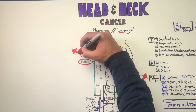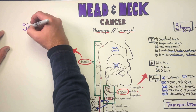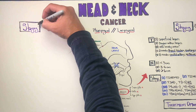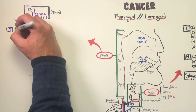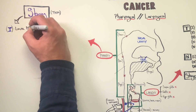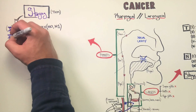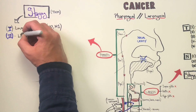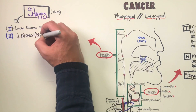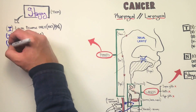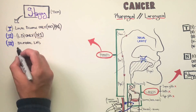Turning now to pharyngeal carcinomas — these can be nasopharyngeal, oropharyngeal, or hypopharyngeal carcinomas. The staging structure again is the TNM staging structure. When we're looking at stage 1 pharyngeal carcinomas, we are looking at localized disease. Stage 2 is again local disease, but lymph nodes are involved at stage 2, not stage 1.